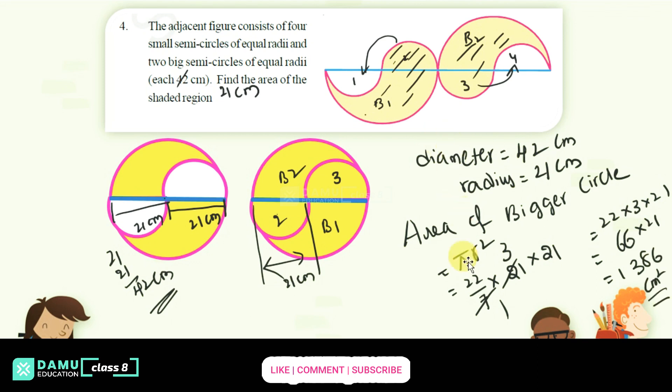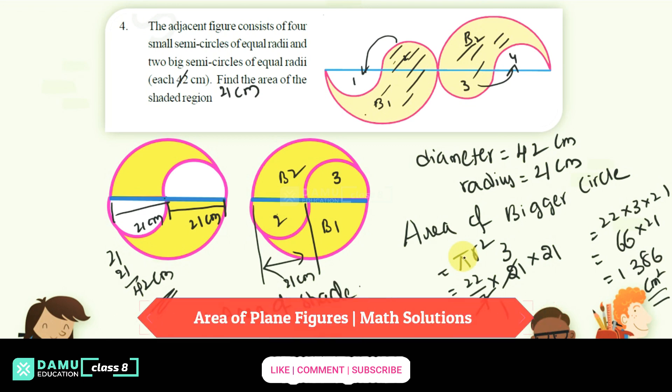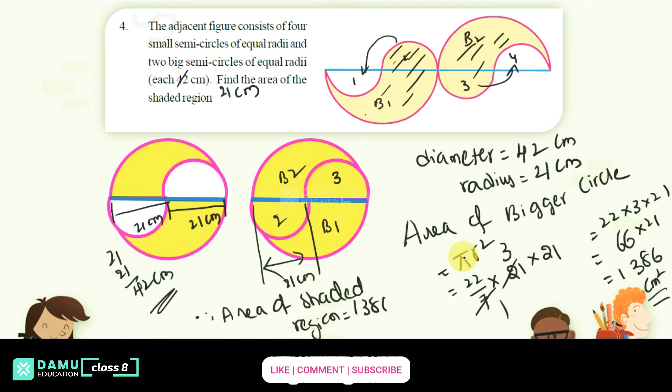Therefore, what you can say here is the area of the shaded region will be equal to 1386 centimeter square.